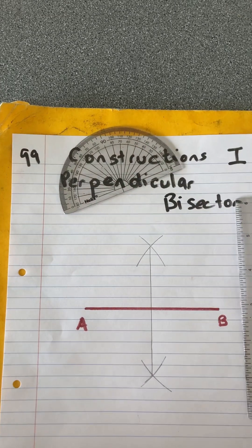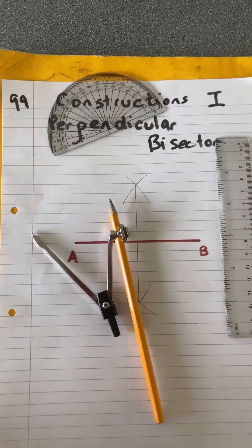There you go. We have constructed a perpendicular bisector using a set of compasses. Smart Maths, thanks.